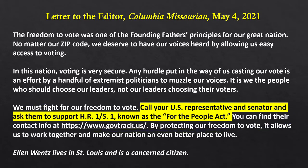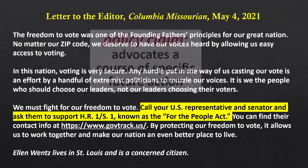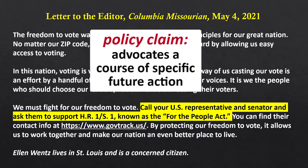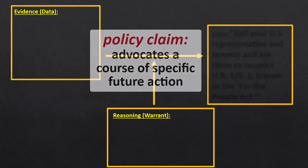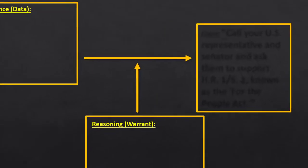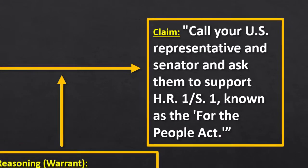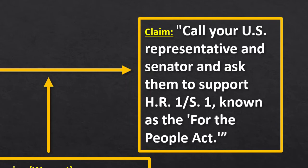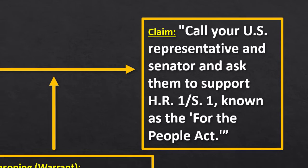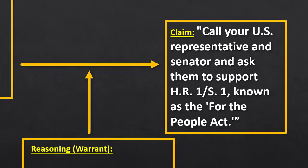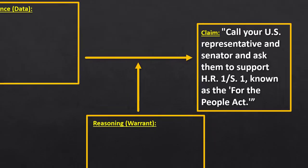Again, another example of a policy claim — a claim that's advocating a course of action. So in the claim box, we can put: call your U.S. representative and senator, ask them to support the For the People Act. So we've got our claim. Now, why should we ask them to support the For the People Act?